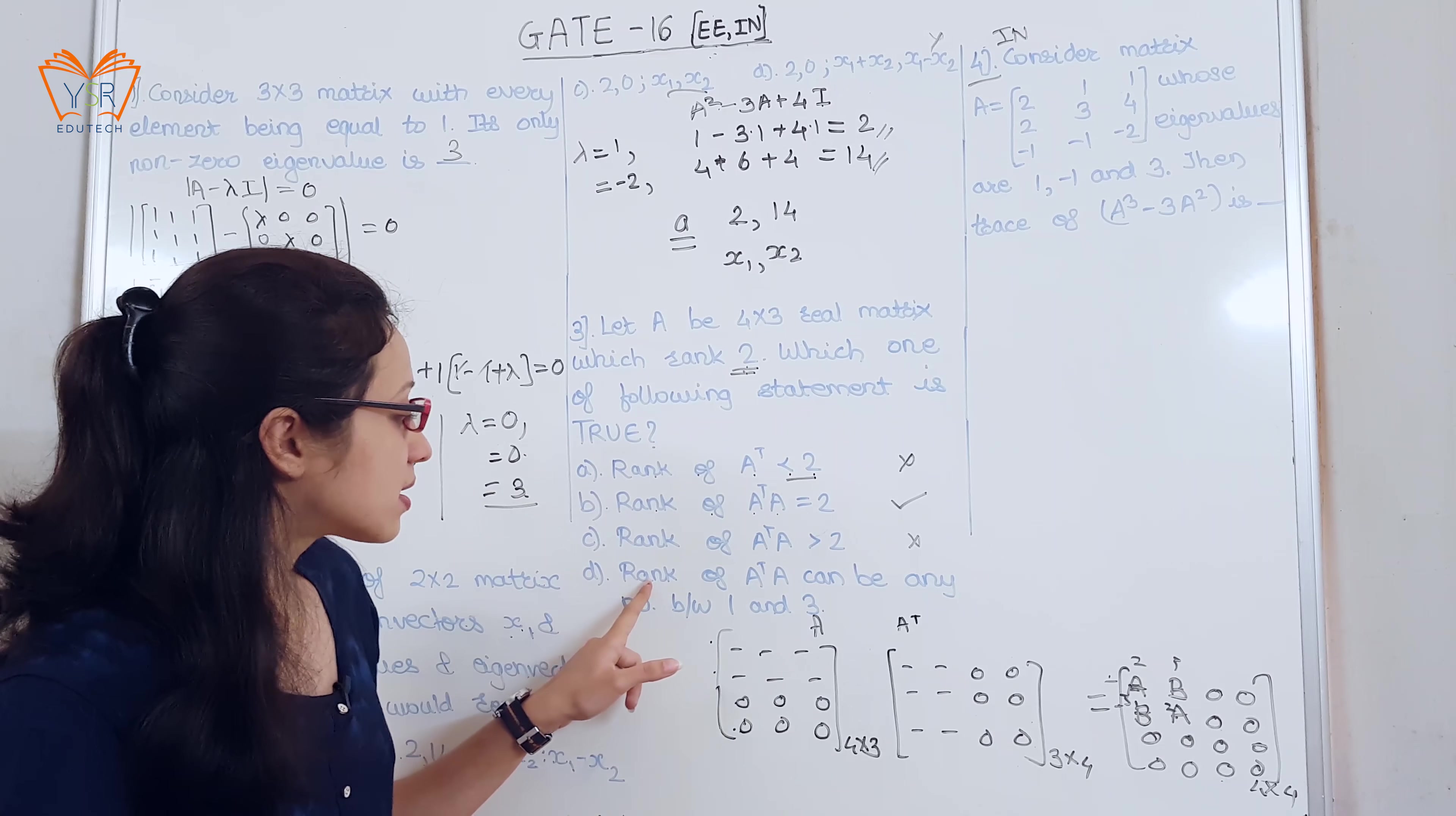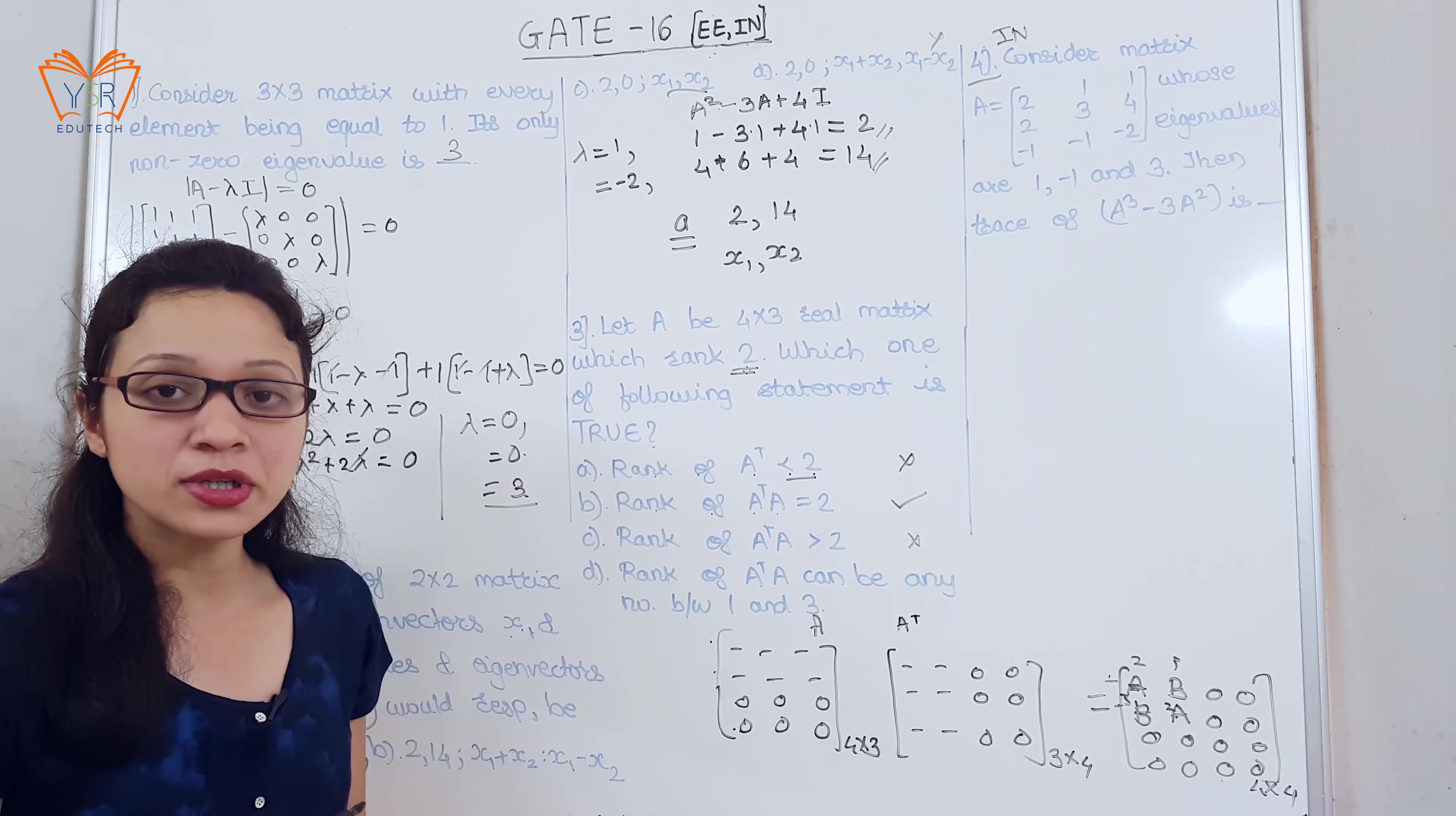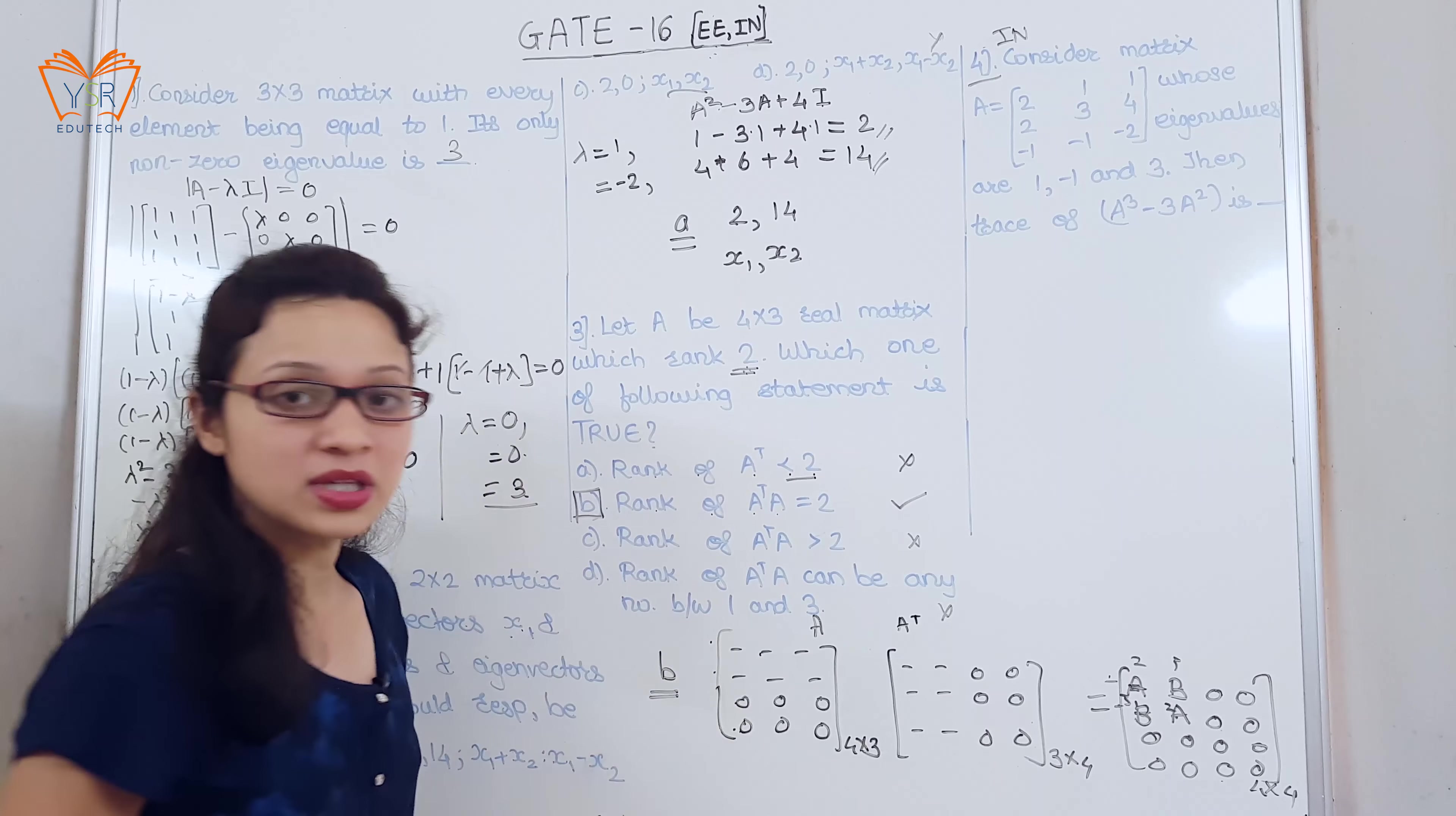The last statement, rank of A transpose into A can be any number between 1 and 3. Why between 1 and 3? If it is specified that rank is equal to 2, it should be 2. It cannot be between 1 and 3. So, again, this is invalid statement. So, we can say that only the B statement is true. Answer is option B.